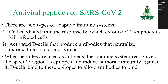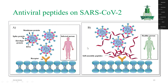The second type involves activated B cells that produce antibodies that neutralize external bacteria or viruses. When peptides are used as antigens, the immune system recognizes a specific region as an epitope, inducing humoral immunity against it, so antibodies are able to bind to it. Here is a representative example showing the mode of action: SARS-CoV-2 binds to the host cell receptor.